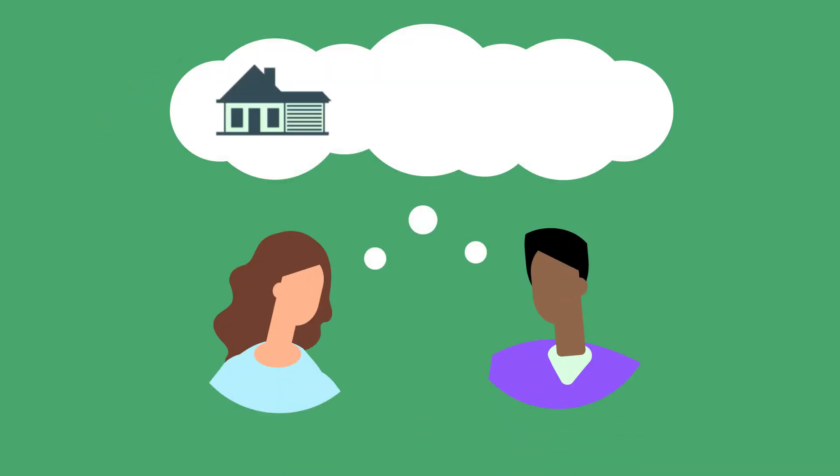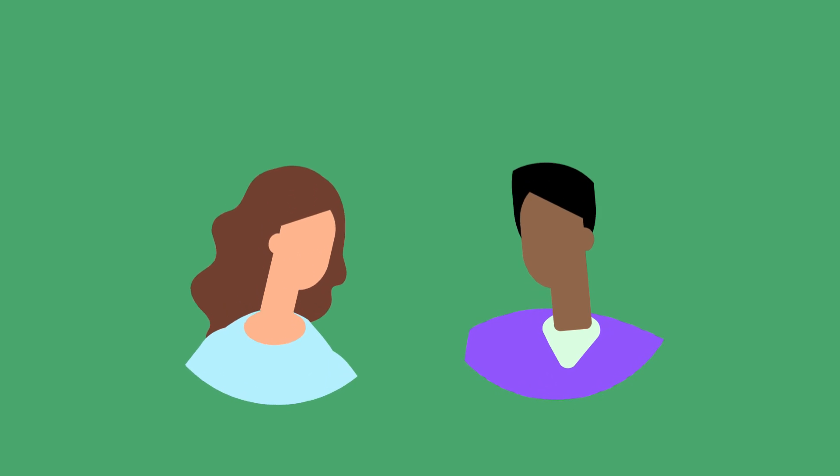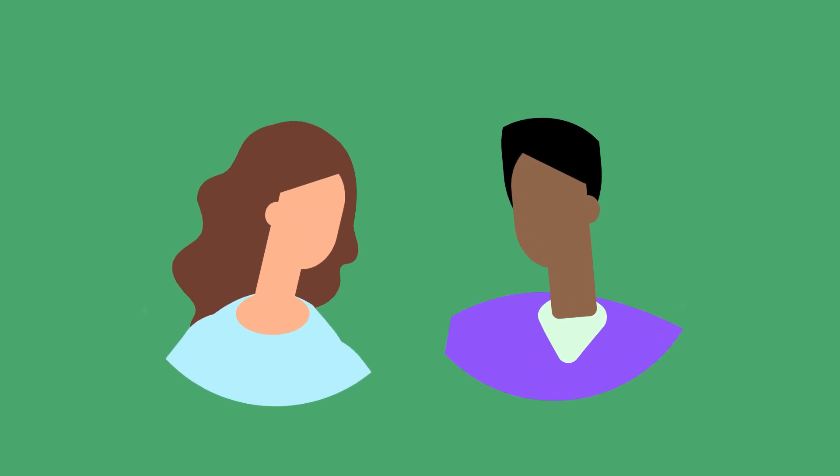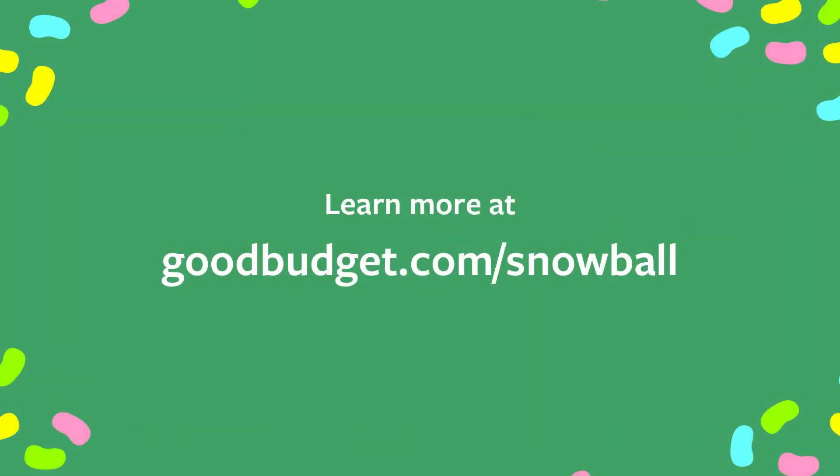And start saving toward a home, retirement, and college for the kids. Until then, Jen and Mike are tracking their debt payoff progress on their phones with Good Budget. Happy budgeting!